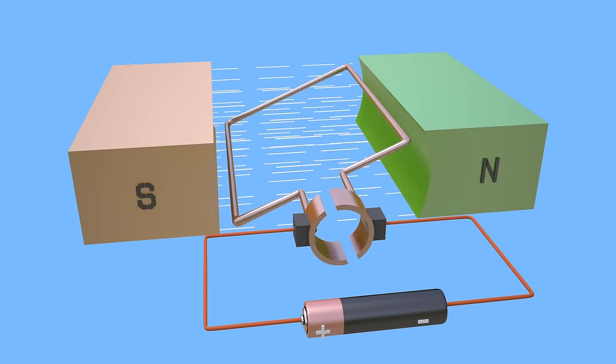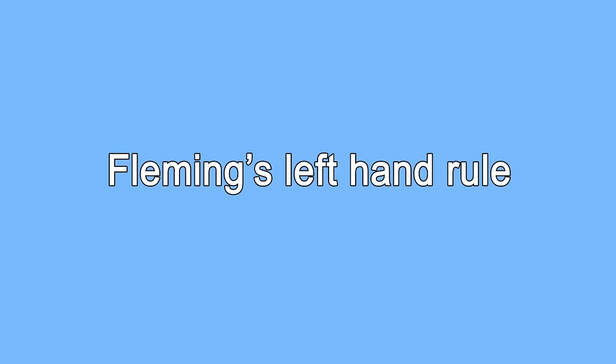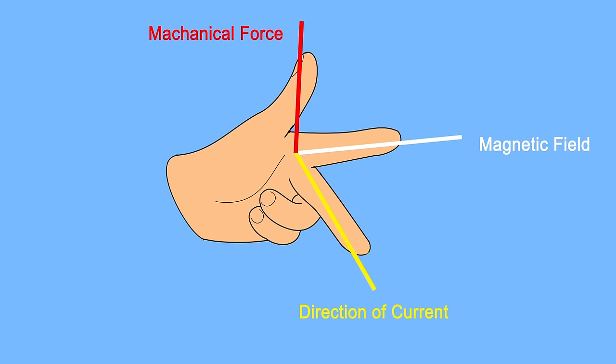The direction of mechanical force can be easily determined by applying Fleming's left hand rule. To do this, spread out your left thumb, forefinger, and second finger so they are all at 90 degrees to one another.